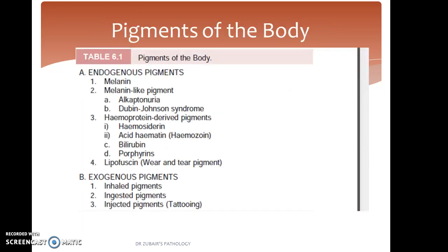Pigments of the body can be endogenous and exogenous. In endogenous pigments, we have melanin; melanin-like pigments seen in Alkaptonuria and Dubin-Johnson syndrome; hemoprotein-derived pigments such as hemosiderin, acid hematin, hemozoin, bilirubin, and porphyrias; and lipofuscin, which is the wear and tear pigment. In exogenous pigments, we have inhaled pigments such as carbon, which we inhale leading to anthracosis; ingested pigments; and injected pigments such as tattooing.